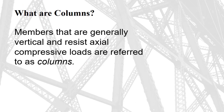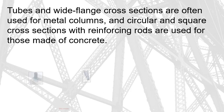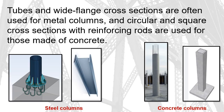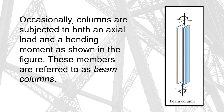What are Columns? Members that are generally vertical and resist axial compressive loads are referred to as Columns. Tubes and wide flange cross sections are often used for metal columns, and circular and square cross sections with reinforcing rods are used for those made of concrete.